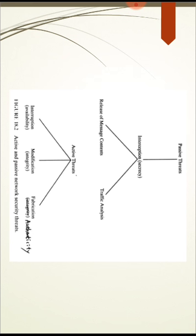The given figure shows active and passive network security threats. In the figure we can see that passive threat is divided into two parts: first it is divided into interception, then further into two parts, that is release of message contents and traffic analysis. Active threat is divided into three parts: interruption, modification, and fabrication.